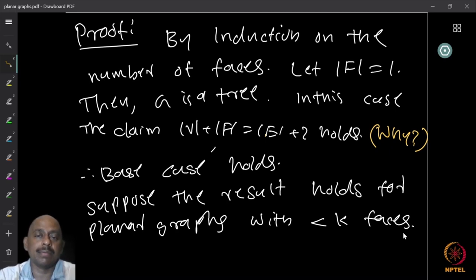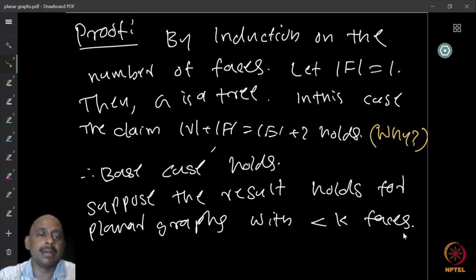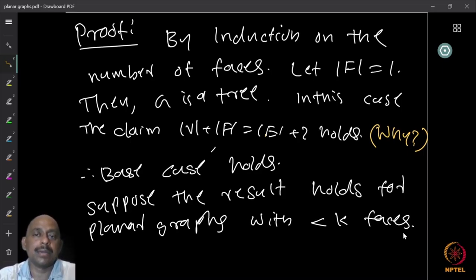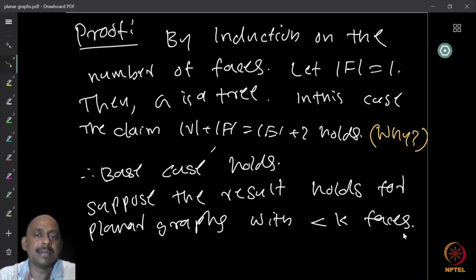Base case: when the number of faces equals 1. This happens only if there are no cycles, because a cycle already separates the plane into at least two parts. So when faces equal 1, the graph is acyclic, and since we assume the graph is connected, it must be a tree. The claim is that the identity always holds for a tree.